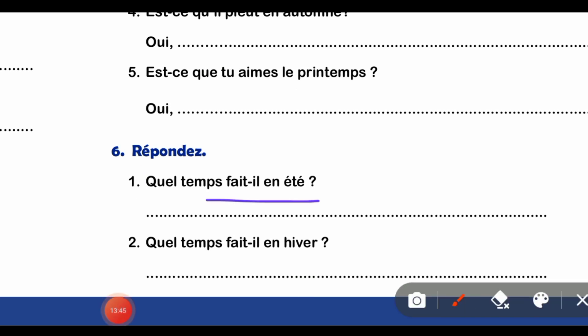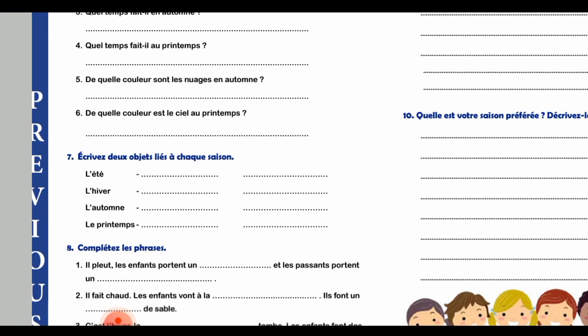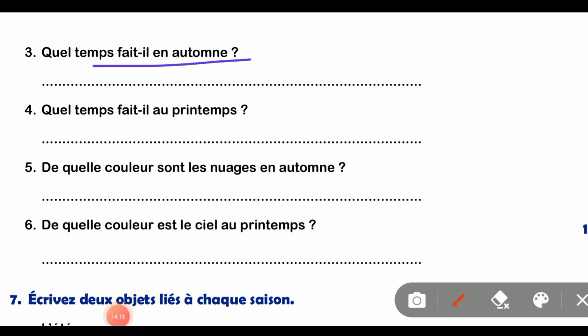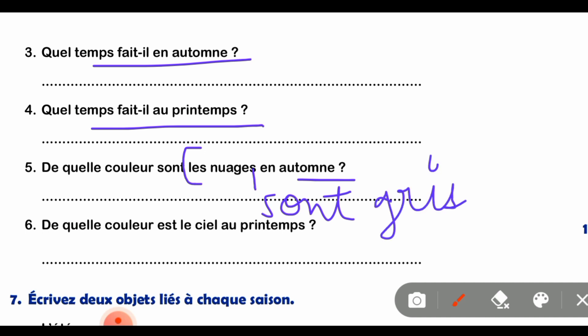Question number 5 also asks about the weather in each season. In summer: 'Il fait du soleil', 'Il fait chaud'. In winter: 'Il fait froid' means the weather is cold. 'Il fait du vent' means it is windy. Part number 4 - 'Quel temps fait-il au printemps' means what is the weather in spring season - you will write 'Il fait beau' means the weather is good.